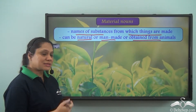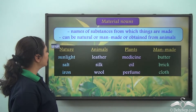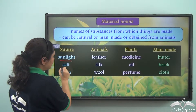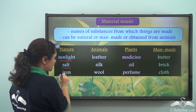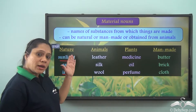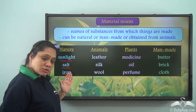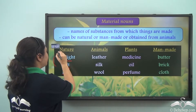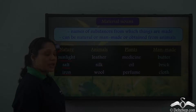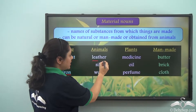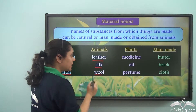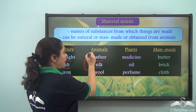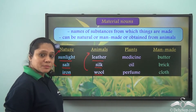Now let us look at a few examples. Sunlight, salt, and iron are material nouns which are obtained from nature. Leather, silk, and wool are material nouns that are obtained from animals.